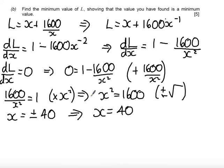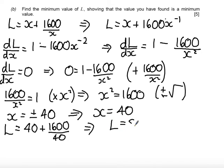So all that's left to do at this point is find the value of L and show that it's a minimum value. First of all, let's find the value of L then. So L is then equal to 40 plus 1600 over 40. So 1600 divided by 40 is going to be 40, so I'll get L is 40 plus 40, so L equals 80 metres.